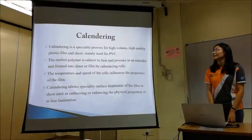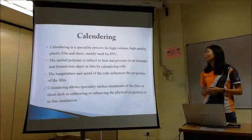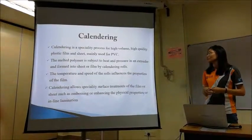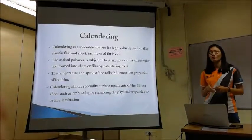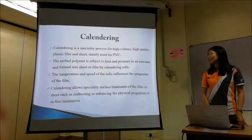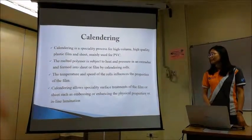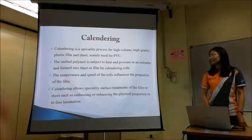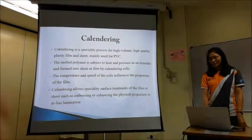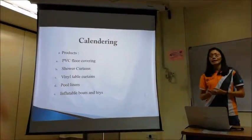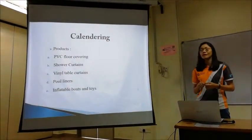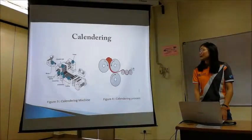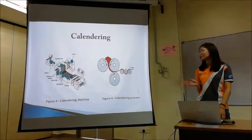Lastly, is calendaring. Calendaring is a speciality process for high volume, high quality plastic film and sheets, and it is mainly used for PVC. The molten polymer is subjected to heat and pressure in an extruder and formed into sheet or film by calendaring rolls. The temperature and speed of the rolls influence the properties of the film, and calendaring allows speciality surface treatment of the film or sheet such as embossing, enhancing physical properties, or in-line lamination. Products that can be made by the calendaring process include PVC floor coverings, shower curtains, coated fabrics, inflatable boards, and toys. These are the figures illustrating the calendaring machines and calendaring process.